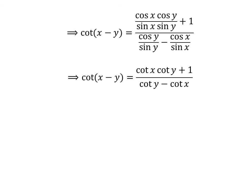We know cosine of x upon sine of x is equal to cotangent of x, and cosine of y upon sine of y is equal to cotangent of y.